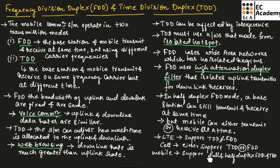A mobile can support full duplex or half duplex FDD and TDD, but it will only use one of these at a time.